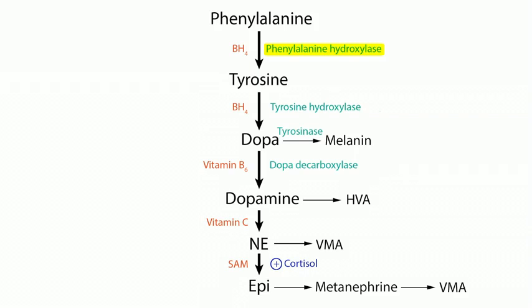Dopa is converted to dopamine, dopamine to norepinephrine, and norepinephrine to epinephrine. Phenylalanine to tyrosine is catalyzed by phenylalanine hydroxylase — deficiency causes PKU. Tetrahydrobiopterin is also required for that conversion. Tyrosine goes to dopa via tyrosine hydroxylase. Dopa decarboxylase converts dopa to dopamine and is inhibited by carbidopa, used to treat Parkinson's disease. Cortisol facilitates the conversion of norepinephrine to epinephrine. Dopamine is broken down by MAO and COMT, yielding HVA; norepinephrine yields VMA; epinephrine yields metanephrine.